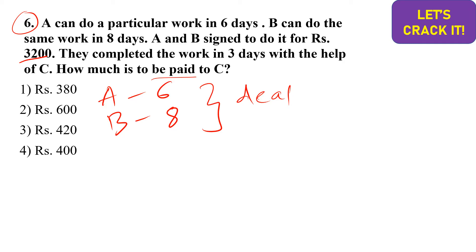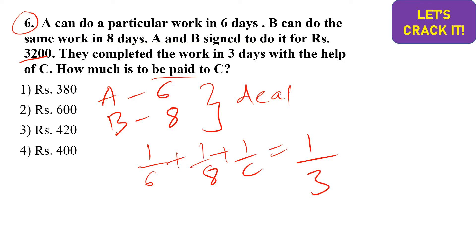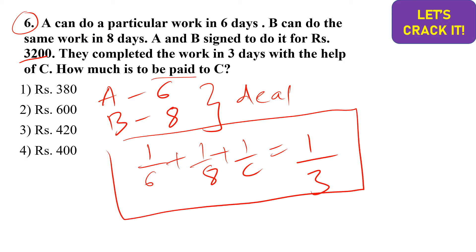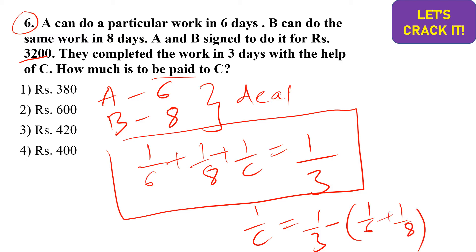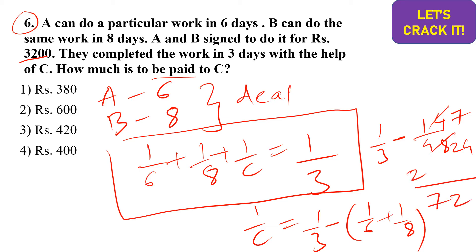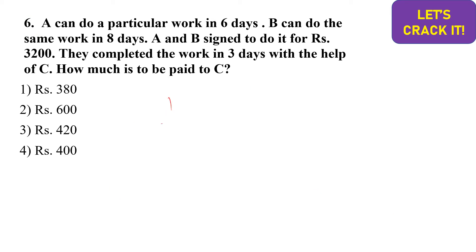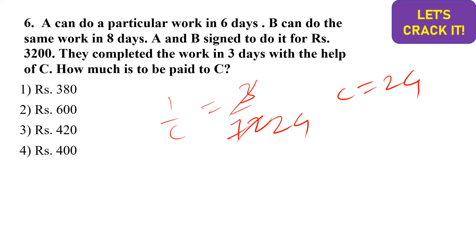The total work is done in 3 days by A, B, and C together. We don't know how many days C alone would take, so the equation is: 1/6 + 1/8 + 1/c = 1/3. Solving: 1/c = 1/3 − (1/6 + 1/8). Taking LCM of 6 and 8, which is 24: 1/6 + 1/8 = 7/24. So 1/c = 1/3 − 7/24 = 8/24 − 7/24 = 1/24. Wait — recalculating: LCM gives 3/72, so c = 24 days.